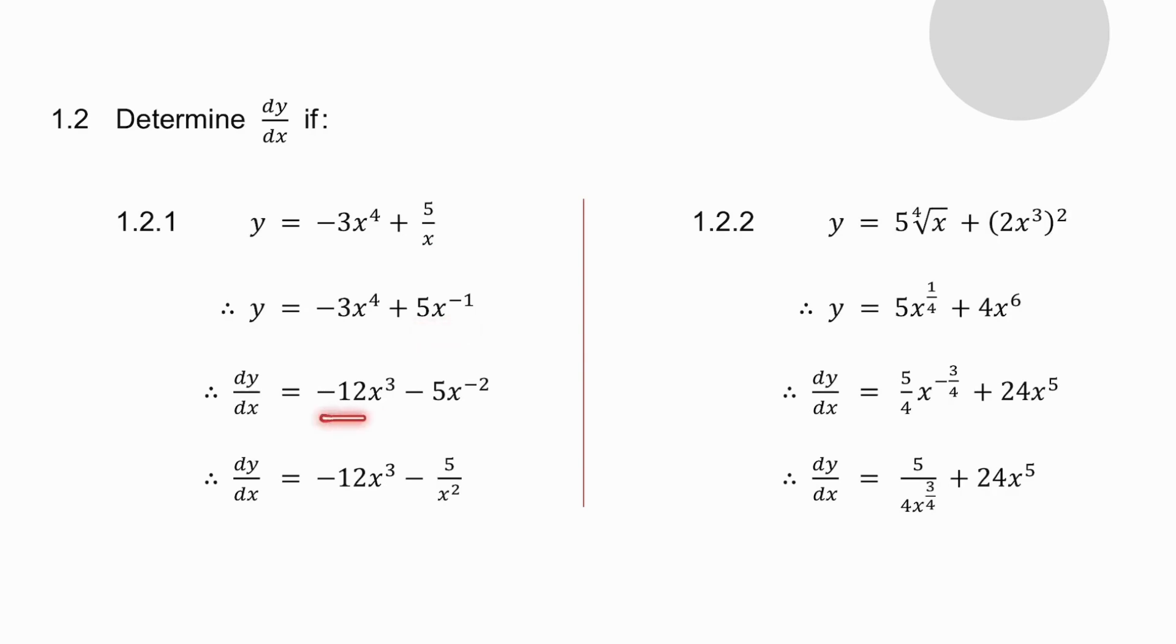In 1.2.2, remember the fourth root of x can be written as x to the quarter. Square the bracket, take the derivative of each term, and then sort out the negative exponent.